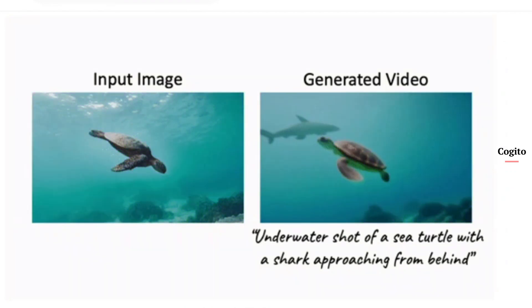Dreamix can create videos based on image and text inputs. In this example, it is able to instill complex motion in a static image, adding a moving shark and making the turtle swim. In this case, visual fidelity to object location and background was preserved, but the turtle direction was flipped.